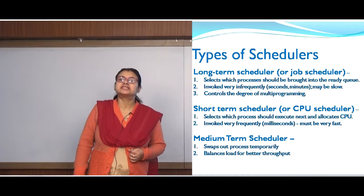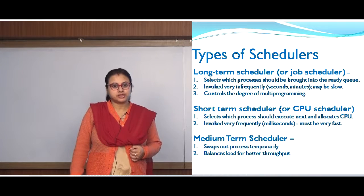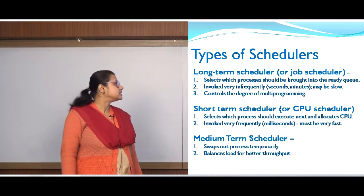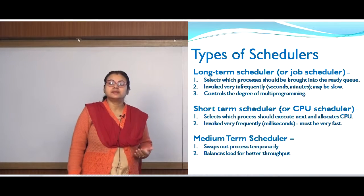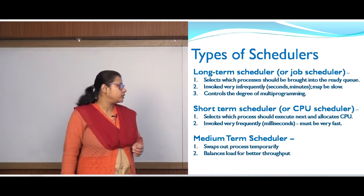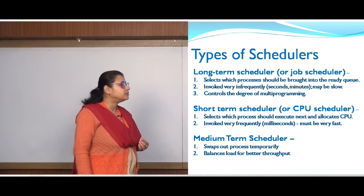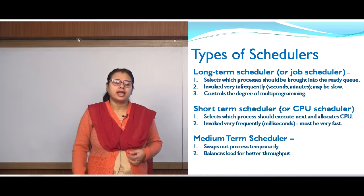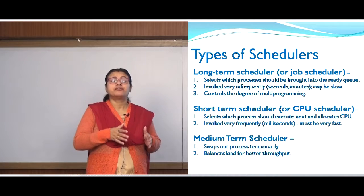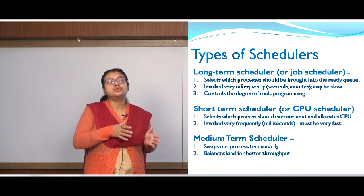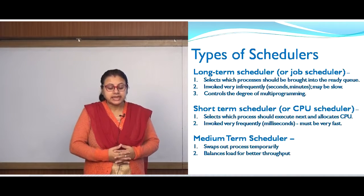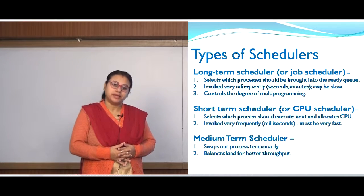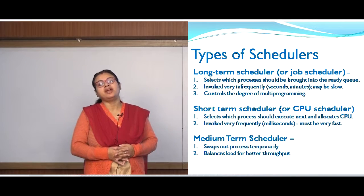In our computer system we have three types of schedulers. In the case of the long term scheduler or LTS, it selects the processes from the secondary storage device to the main memory. The scheduler is bringing the processes into the ready queue. It is invoked very infrequently — it may be very slow, invoked either in seconds or in minutes, and it controls the degree of multiprogramming.